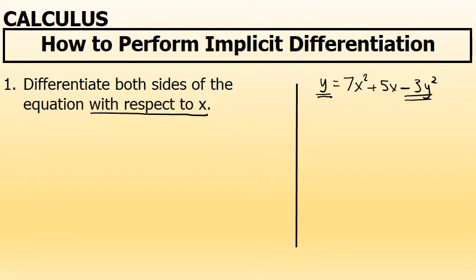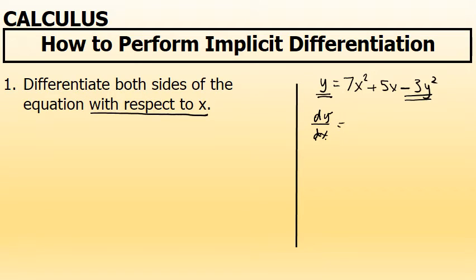On the left side of the equation we have y equals, and when we take the derivative of y with respect to x, that can be written a couple of different ways. One way, dy over dx, is literally read aloud as the derivative of y with respect to x. That can also be stated as y prime, which is what we'll do here. We're going to consider y prime to mean the derivative of y with respect to x.